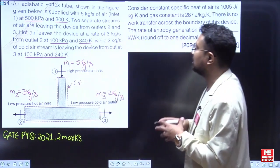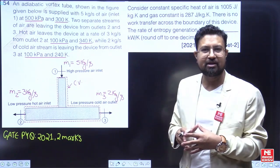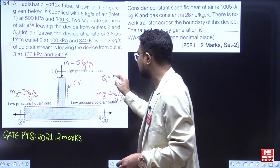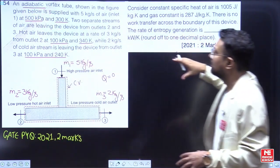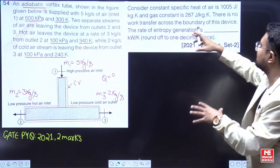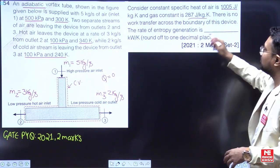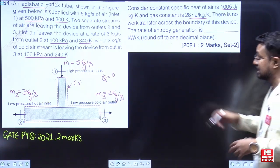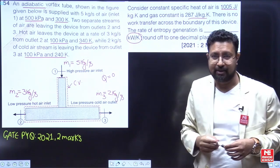This is an adiabatic vortex tube, meaning there is no heat transfer from outside, so the heat transfer from this device is zero. There is no work transfer across the boundary of this device either. We need to find the rate of entropy generation in kilowatt per Kelvin.